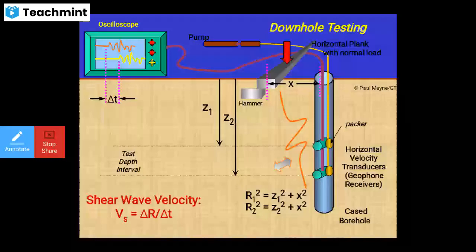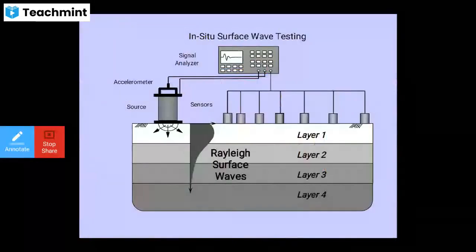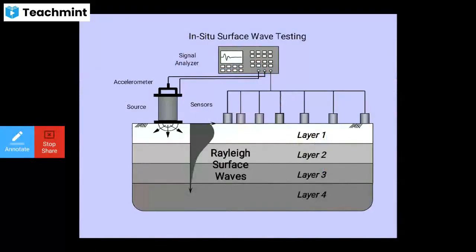In-situ surface wave testing uses a signal analyzer. Rayleigh surface waves propagate through layers 1, 2, 3, and 4. Sensors and accelerometers record the surface wave testing data. This is how in-situ surface wave testing is carried out.